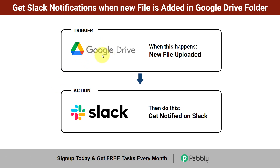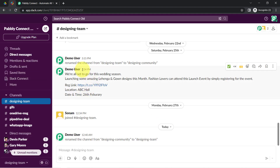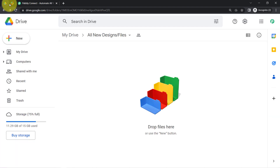Every time someone uploads a file into Google Drive, you can automatically get notified on your Slack channel without doing anything manually. If you want to automate the process of getting notifications whenever any new file is uploaded, follow along. I have created a specific folder in Google Drive called 'all new designs and files,' and whenever any team member uploads a file there, I will get notified in my Slack channel automatically.